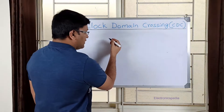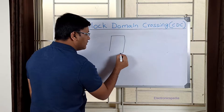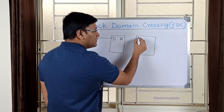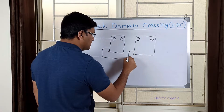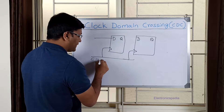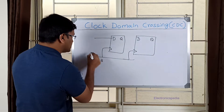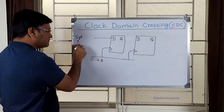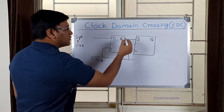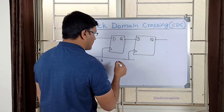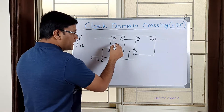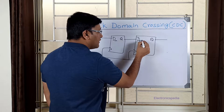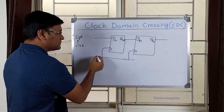Consider a two-stage synchronizer — it has two flops connected back to back. This is my D input, this is Q of the first flop, feeding into D of the second flop, with Q as the output. I'm feeding the clock to both. The clock here is Clock B. My Signal A, generated in clock domain A, is coming in, and I'm trying to sample it into clock domain B using this two-stage synchronizer. I'll label the nodes as Dm, Dn, Qm, and Qn.